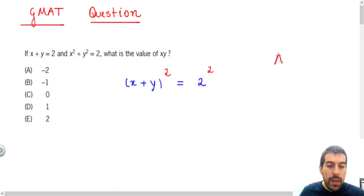If I have A equals B, it means that A squared needs to be equal to B squared. That is the property that I'm using here.